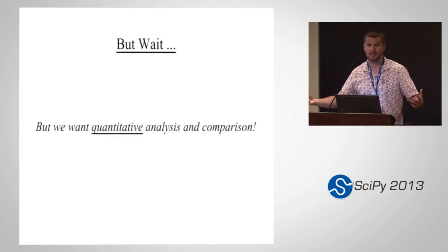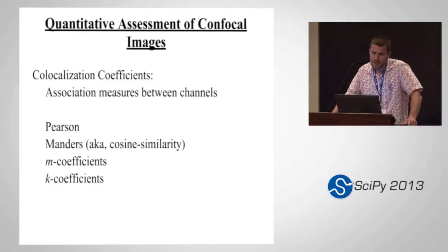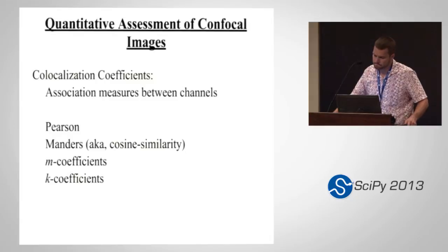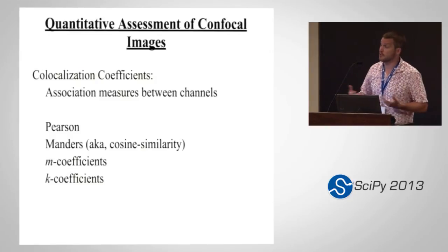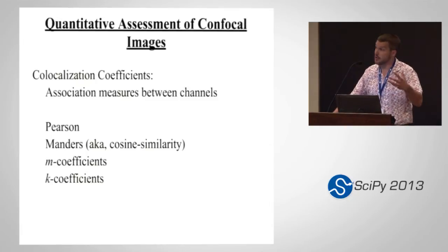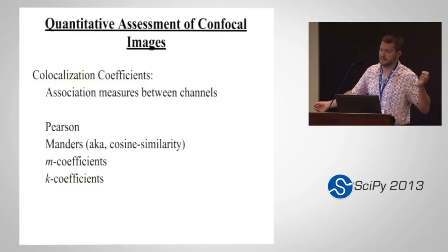We had qualitative comparisons, which were very useful, but the entire goal of this project was quantitative analysis, so we also wanted a quantitative comparison. In confocal microscopy, one way we assess simultaneous behavior of different stains is with co-localization coefficients. In the statistical literature you might find these called association measures — Pearson's correlation coefficient is one we all know. A few other coefficients of interest are available in ImageJ and Metamorph, but computing them in a batch-wise process over many images is not — and that's where our work came in.